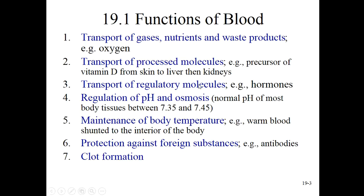Transport of regulatory molecules like hormones — the blood is the transport system. There are also things happening within the blood chemically, like the regulation of pH, a buffering that happens largely because of bicarbonate, and osmosis primarily because of albumin, an important protein in our plasma. Blood itself has this inherent or intrinsic ability to maintain homeostasis.